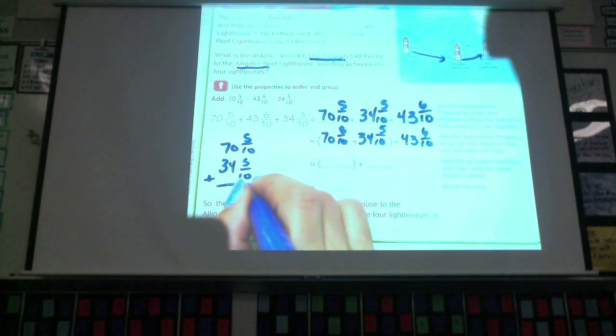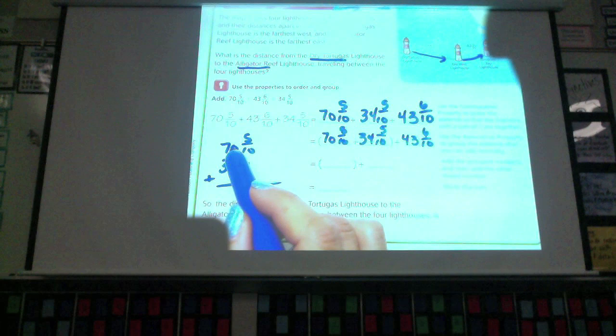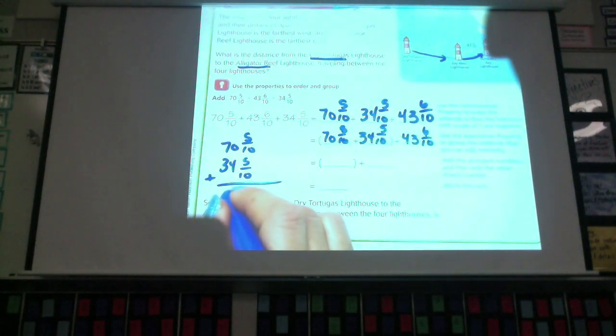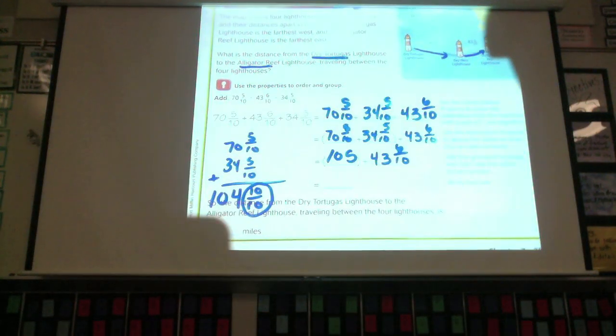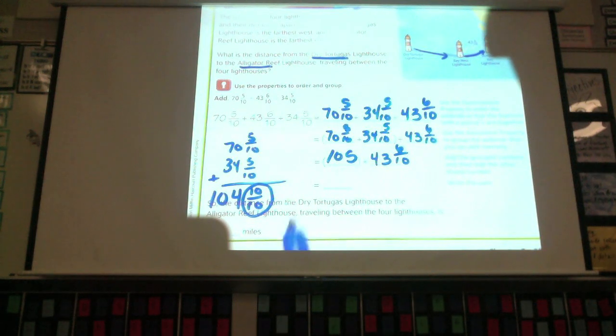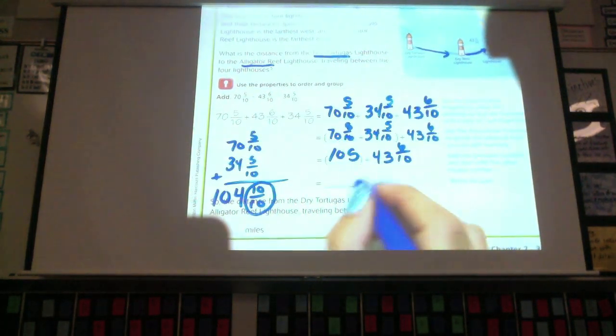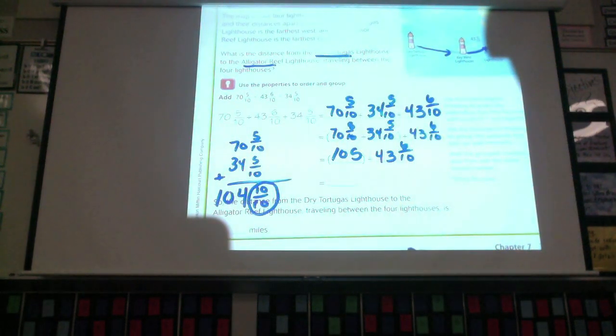I'm going to add these. What is 5 tenths plus 5 tenths, class? A whole. 10 tenths. I'm going to put it like this first. It is a whole, but I'm going to put it like this first. I have 4 plus 0 is 4. And 7 plus 3 is... Why do I have 104 here and 105 here? Who could explain that? Because 10 tenths is one whole, so 104 plus 1 equals 105. Very good. So, I changed this 10 tenths to one whole and made it 105.